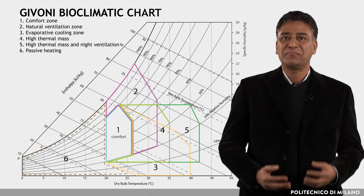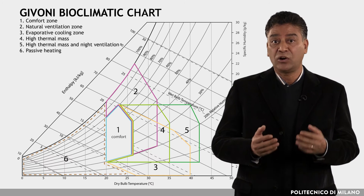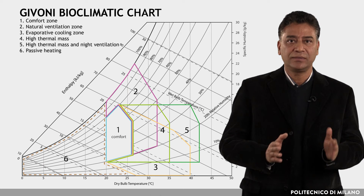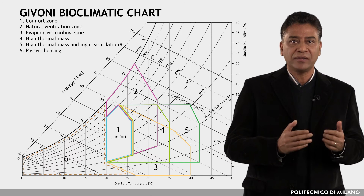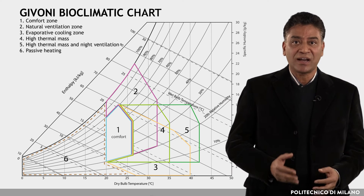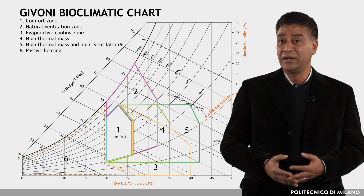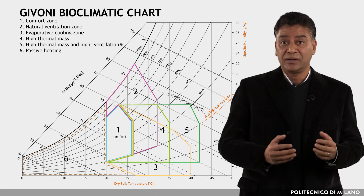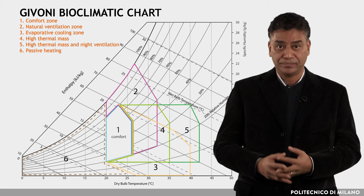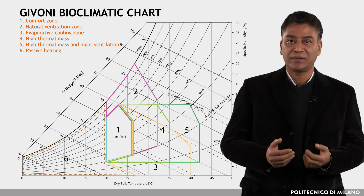Givoni conceived a bioclimatic chart for buildings in 1969 in order to help the designer in the choice of the most appropriate design strategies starting from local climatic conditions. Givoni's chart is based on indoor temperature and humidity of the building and suggests design strategies to adapt architecture to climate. The chart uses as a basis a psychometric chart.